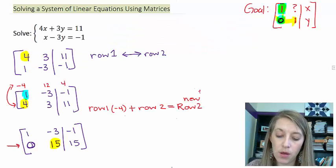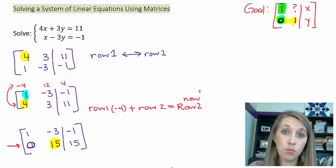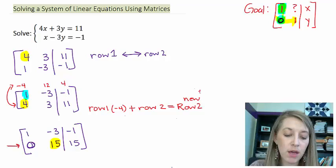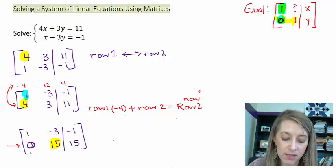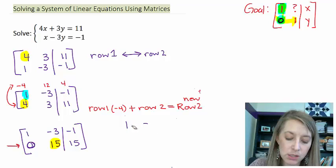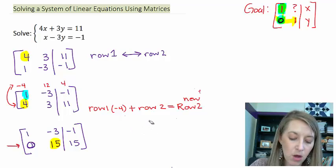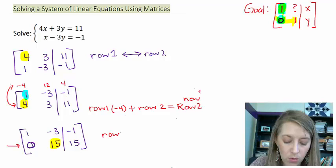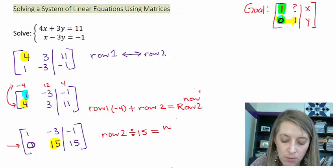Going back to my example here, to get rid of this 15, basically all I need to do is I need to multiply or divide that row by something. So, again, if you think about this in equation format, if I have a 0x plus a 15y is equal to 15, I would just divide everything by 15. So that's what I'm going to do in this matrix format, is I'm going to take my row 2, and I'm going to divide it by 15, and that's going to be my new row 2.